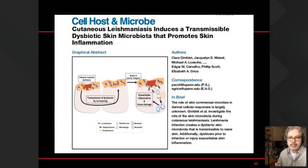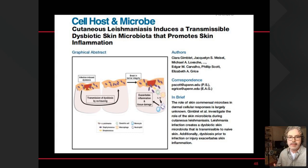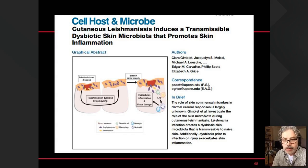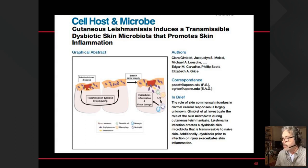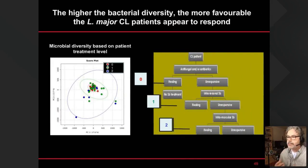Some of these observations have been made already — notably in fantastic work by the lab of Phil Scott, showing dysbiotic skin in relation to Leishmania infection. What is not in that work is the role that dysbiosis may play in the response to treatment. A lot of work has already been done by that group, and it's important to acknowledge this. Now looking at longitudinal data: when a patient heals — whether by antifungal/antibiotic alone (step zero), intralesional (step one), or intramuscular (step two) — this correlates with diversity.